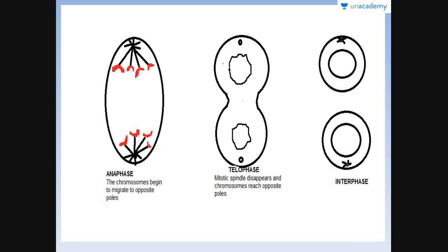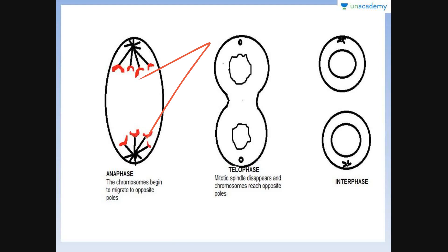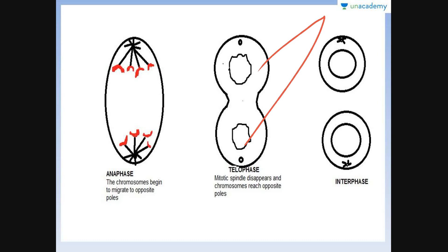In the diagrammatic representation of anaphase and telophase: during anaphase, the spindle fibers are shortening, the sister chromatids have separated forming individual chromosomes moving towards opposite poles. During telophase, the nuclear envelope starts to reappear, the chromatin material starts to decondense becoming coiled and tangled once again, all organelles reappear, and the mitotic spindle has disintegrated.